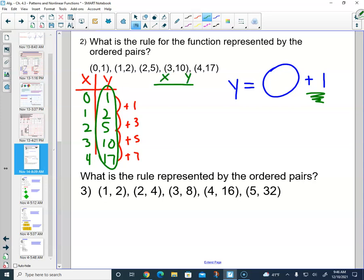So I would have (0,0) because 1 minus 1 is 0. (1,1) - 2 minus 1 is 1. (2,4) - 5 minus 1 is 4.